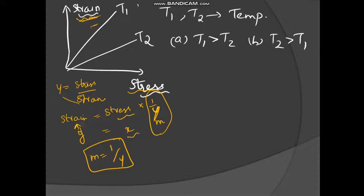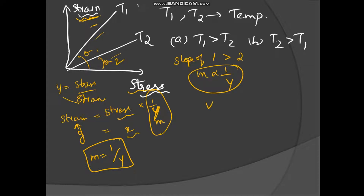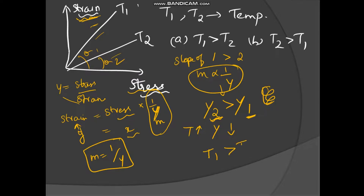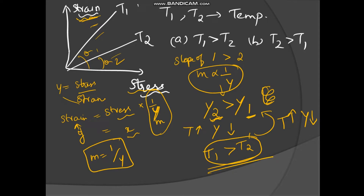For the same wire, two lines are given. Slope of line 1 is greater than slope of line 2 (theta-1 > theta-2). Since slope is inversely proportional to Young's modulus here, Young's modulus of 2 is greater than Young's modulus of 1. We know that as temperature increases, Young's modulus decreases. Since Y2 > Y1, temperature T1 must be greater than T2. So T1 > T2, and option A is the correct answer.